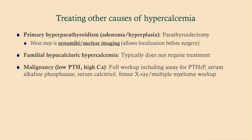For primary hyperparathyroidism with an adenoma or hyperplasia, these patients need a parathyroidectomy. Your next step when considering surgery is to get nuclear imaging or sestamibi imaging — this tells the surgeon where the adenoma is so they're not going in blind. Remember there are complications of operating in the neck — it's a very bloody, very dangerous area. FHH does not typically require treatment. With malignancy, there are further laboratory workups you can do.